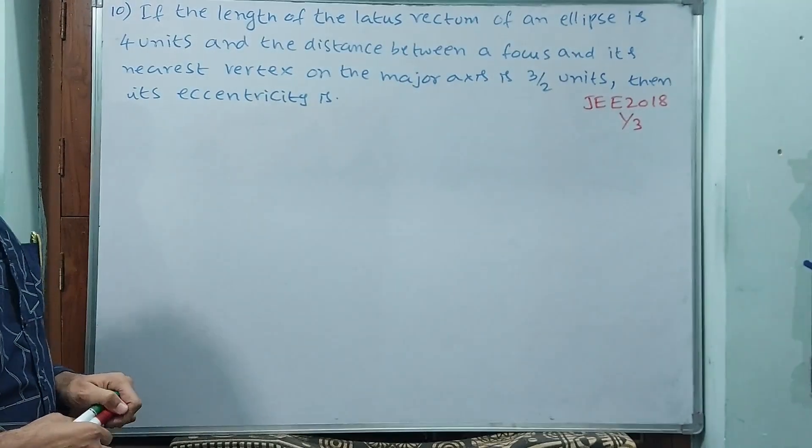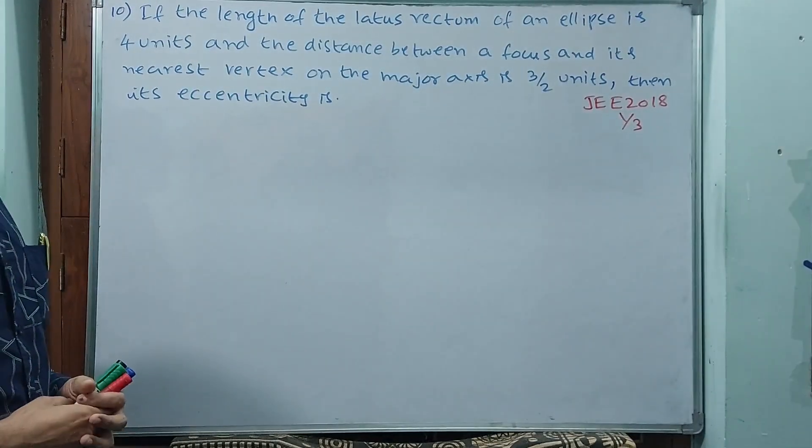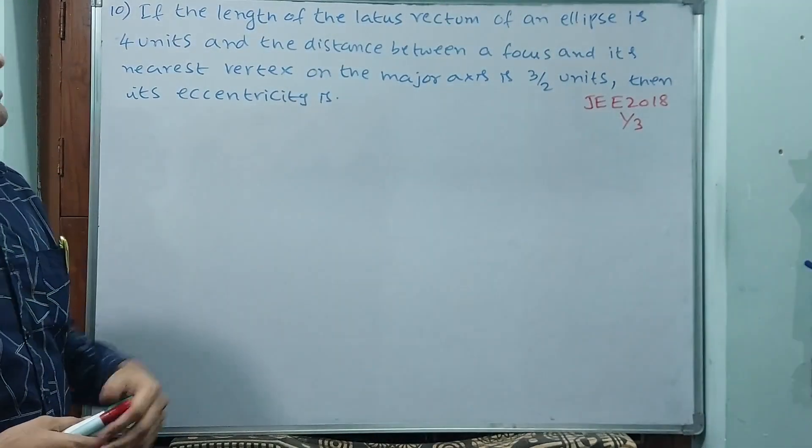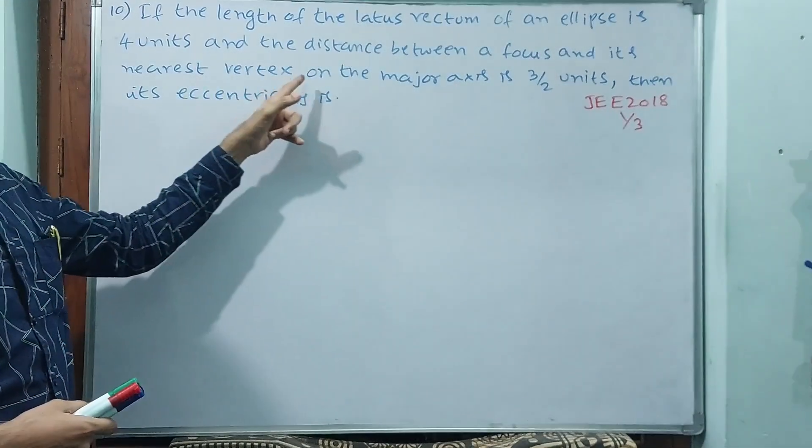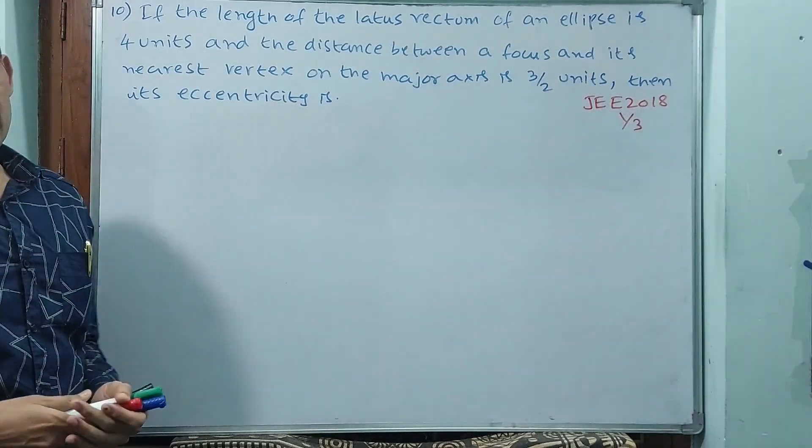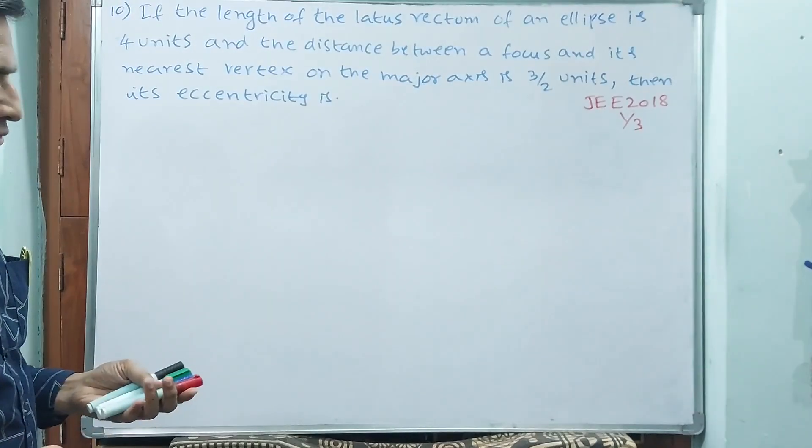Okay, let us see question number 10. The length of the latus rectum of an ellipse is 4 units and the distance between a focus and its nearest vertex on the major axis is 3 by 2 units. Then its eccentricity is asking, answer should come 1 by 3.